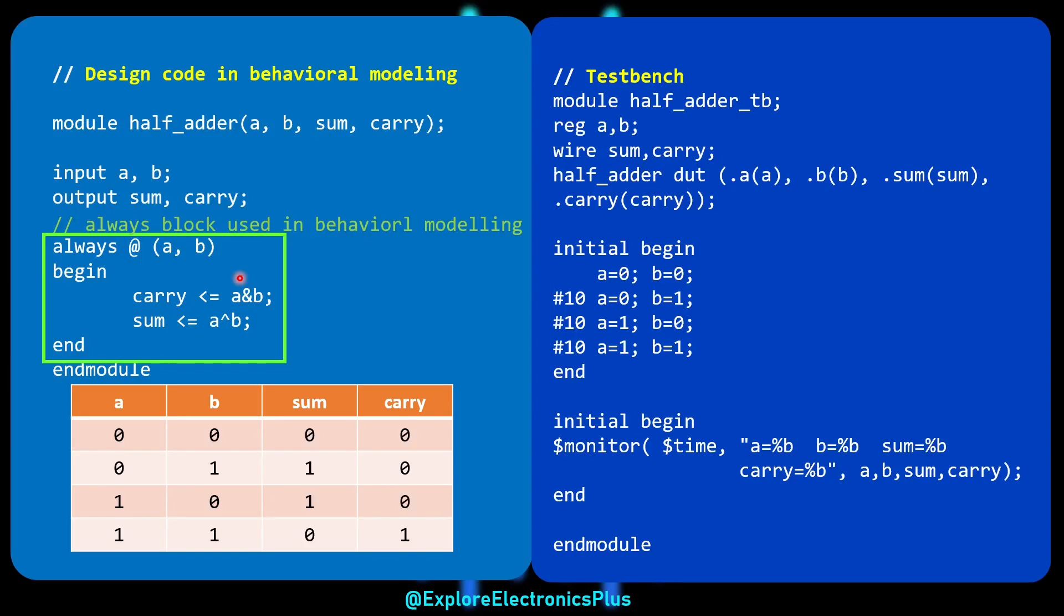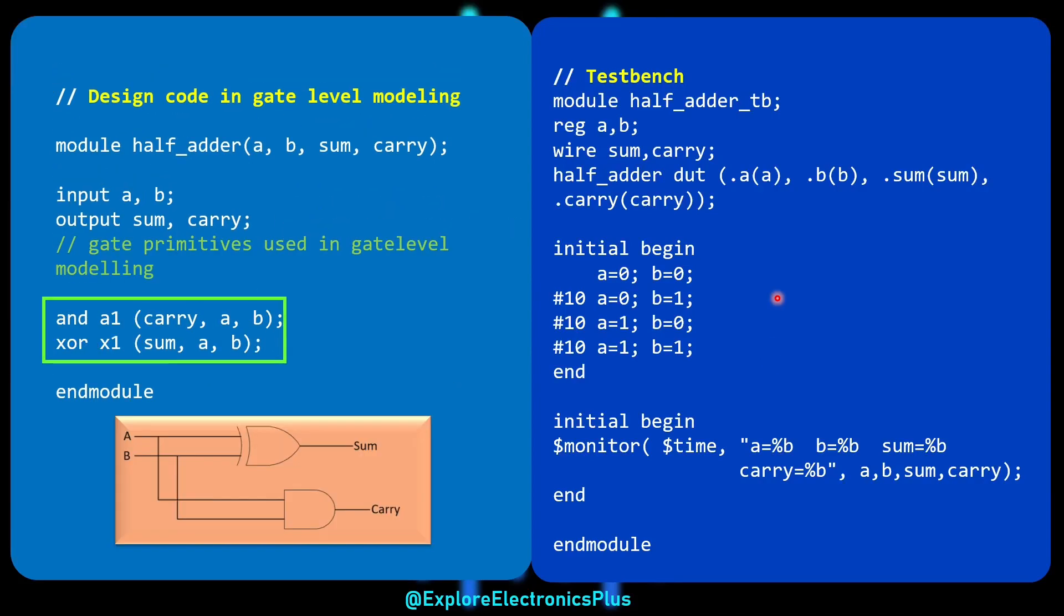This is about the half adder design using three modeling styles. And if you look at the test bench, this is for behavioral modeling code what I have written. The test bench will be like this. And also for the gate level modeling, it will be same. There will be no change in the test bench with respect to the modeling styles changed in the design. Thank you.